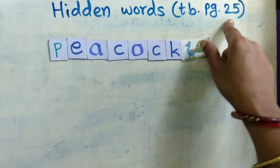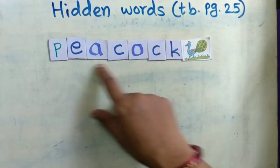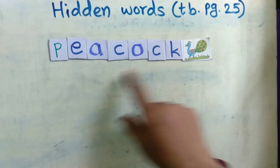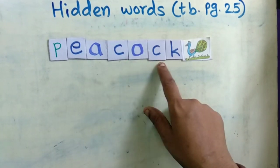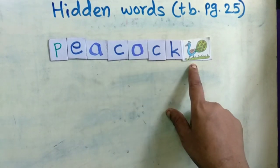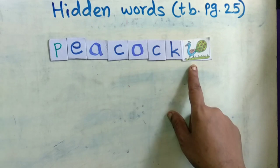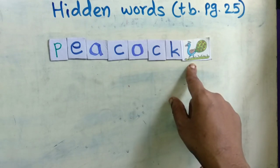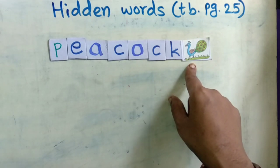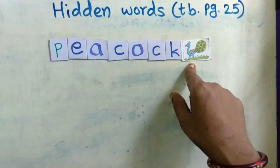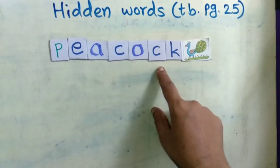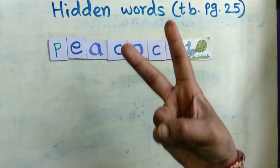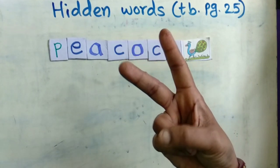Now what is this activity? Here is a word: P-E-A-C-O-C-K, Peacock. Peacock is our national bird. It's a beautiful bird. Now in this spelling there are two hidden words.